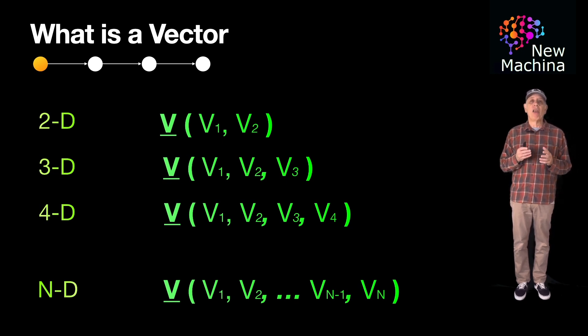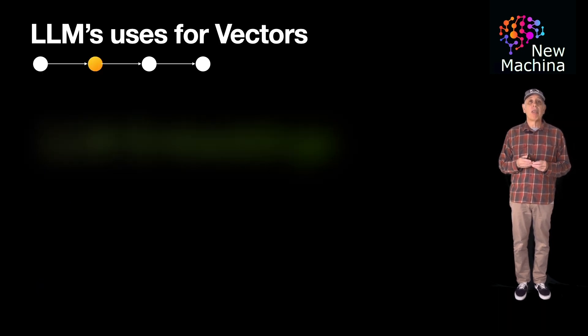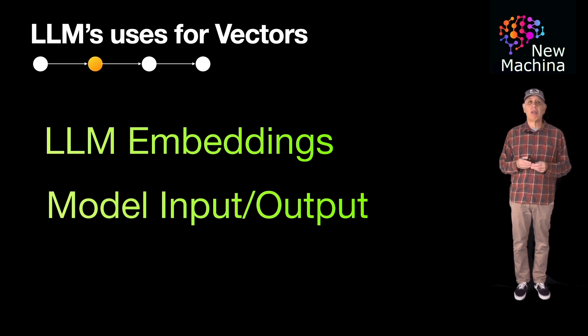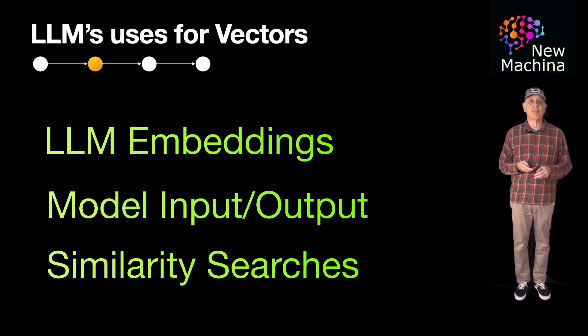There are three common ways LLMs use vectors that I want to cover in this video. They are LLM embeddings, LLM model input output operations, and similarity searches. So let's first talk about the first one. What is an LLM embedding?